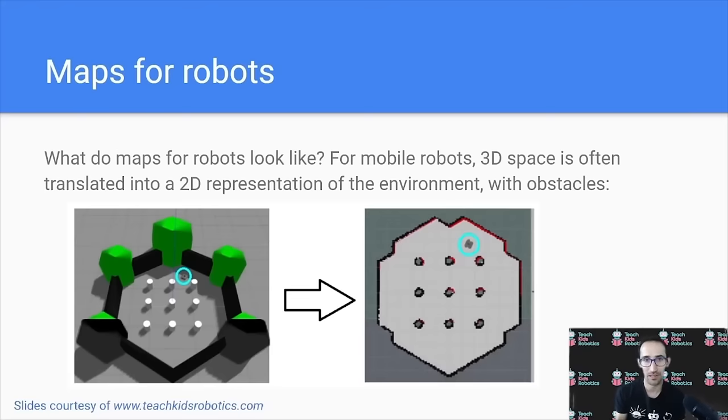But what do robot maps look like? For example, for mobile robots, 3D space is often translated into a 2D representation of the environment, with obstacles kind of shown and free space highlighted as two separate colors. We can see in this image here that the robot, highlighted in blue, maps directly to the robot on the map equivalent that shows free space and where obstacles are.